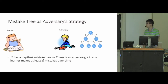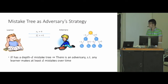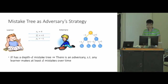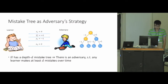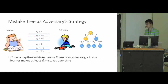To see how the adversary uses this mistake tree, consider the interaction using this tree. The adversary first shows the example at the root. The learner makes a prediction, say plus one; then the adversary reveals the label minus one to force a mistake, and follows the left downward edge to the left subtree. Then the adversary shows the next example; if the learner predicts minus one, the adversary reveals plus one. The interaction ends when a leaf is reached. No matter what the learner predicts, the adversary is able to force the learner to make two mistakes.